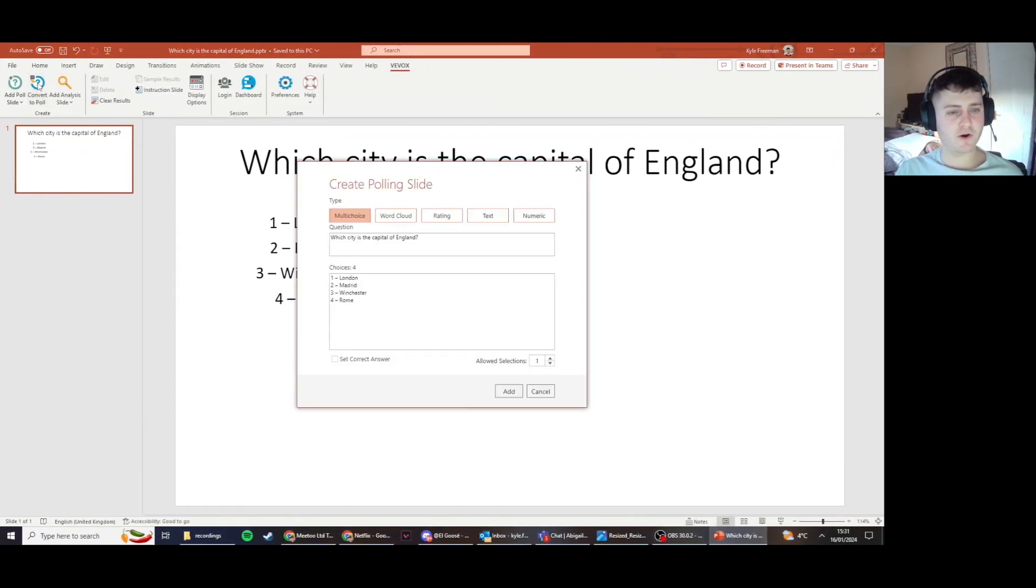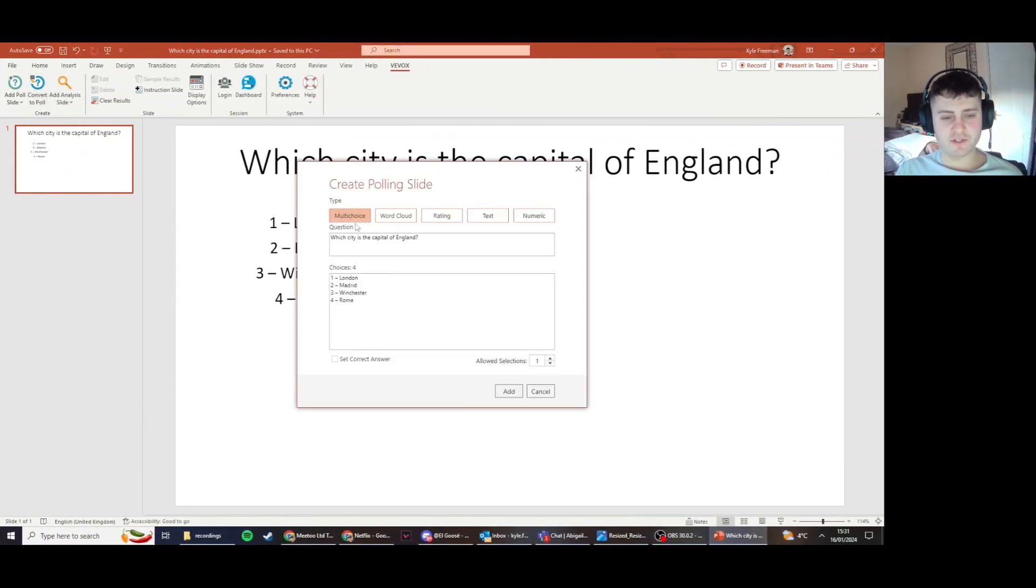Now we can head up to convert to poll. Make sure that multi-choice is selected. Make sure that you're happy with your question or title. Go ahead and delete any numbers or A, B, or whatever might have been used by the previous polling software.